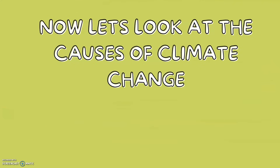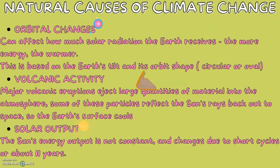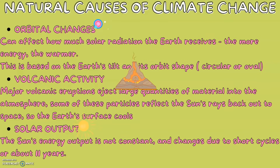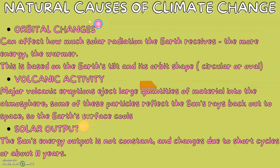Now let's look at the causes of climate change. Natural causes. First, orbital change can affect how much solar radiation the Earth receives — the more energy, the warmer. This is based on the Earth's tilt and its orbital shape, whether it's circular or oval. Second, volcanic activity: major volcanic eruptions eject large quantities of material into the atmosphere, and some of these particles reflect the Sun's rays back out to space, so the Earth's surface is left cooler.